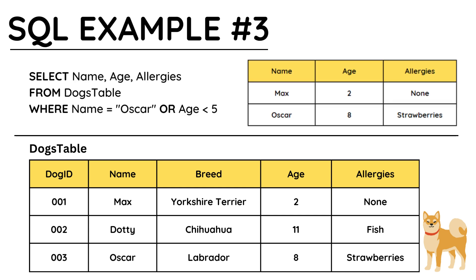In this third example, I've selected the name, age, and allergies fields from the dogs table, but my WHERE command is a bit more complicated. As mentioned earlier, you can use AND or OR in the WHERE statement. I've used OR here to display data about dogs named OSCAR or those that are younger than 5. With that criteria, it is MAX and OSCAR that will be selected.